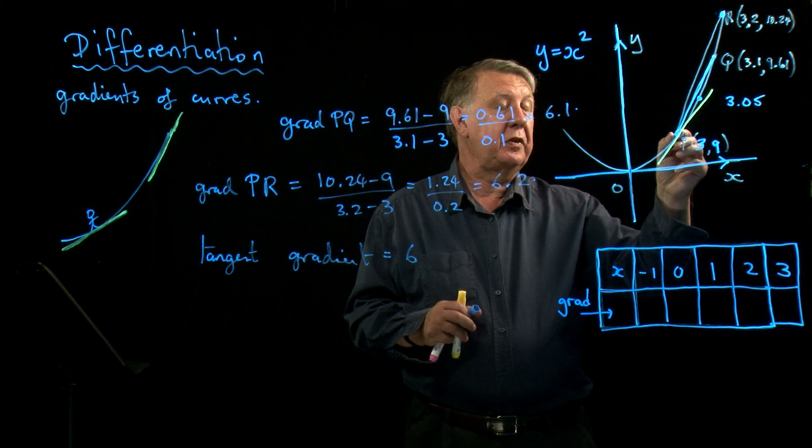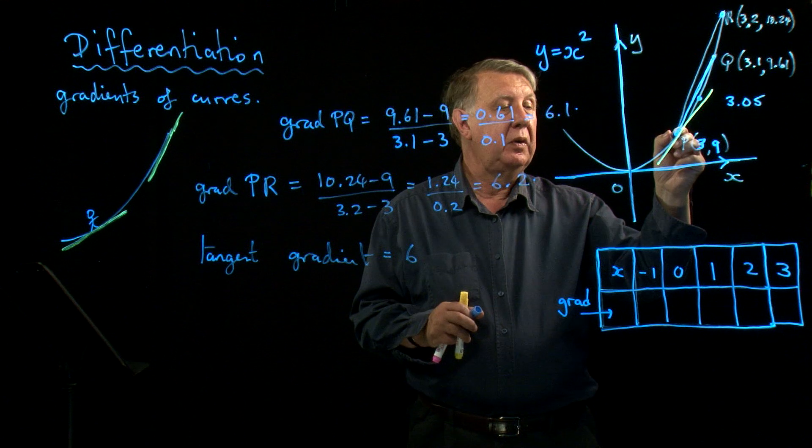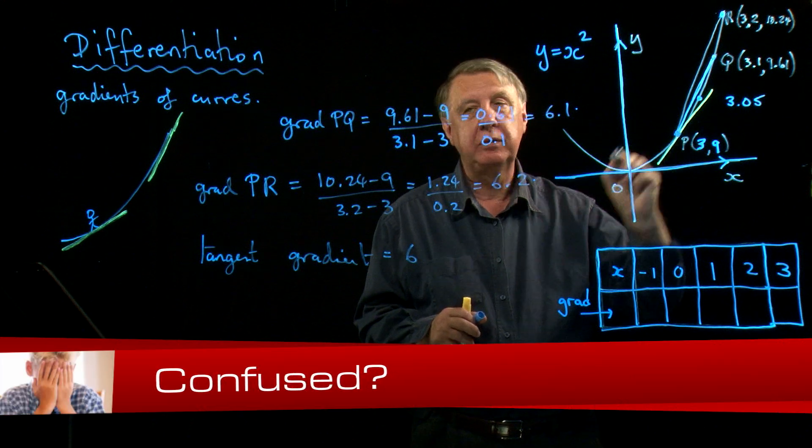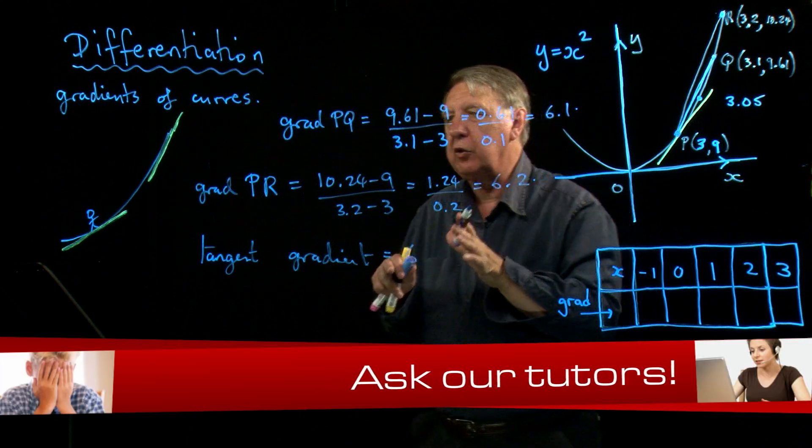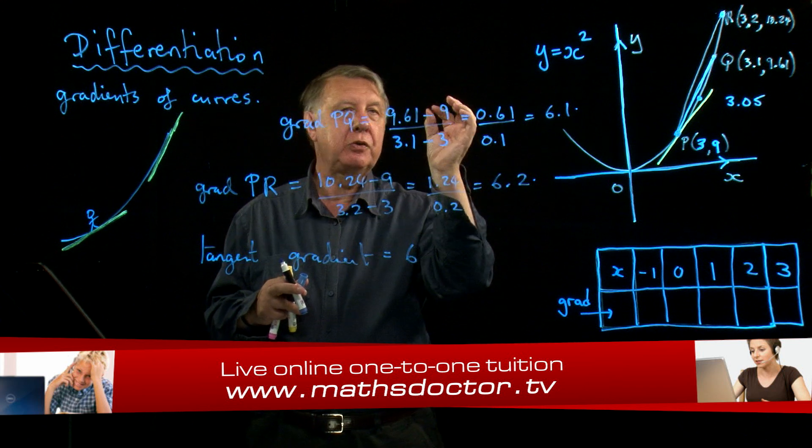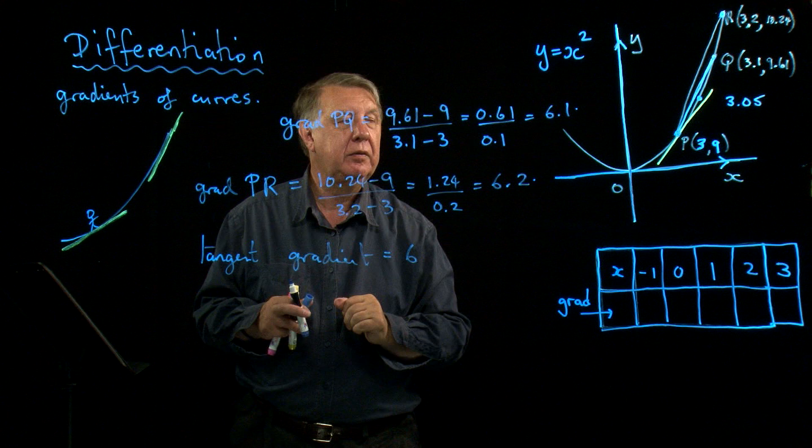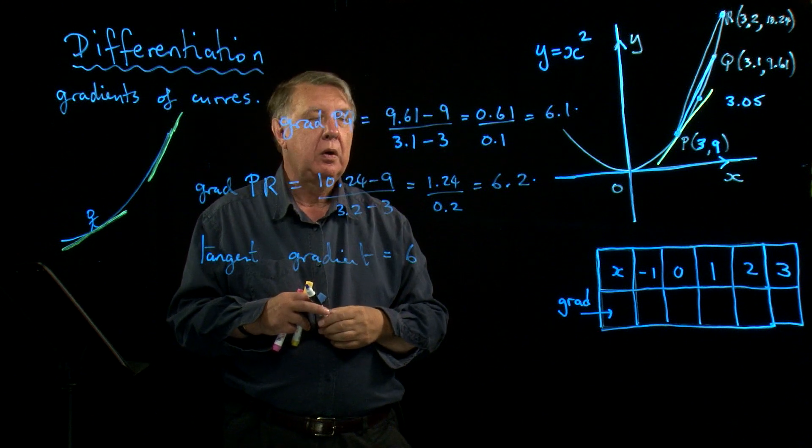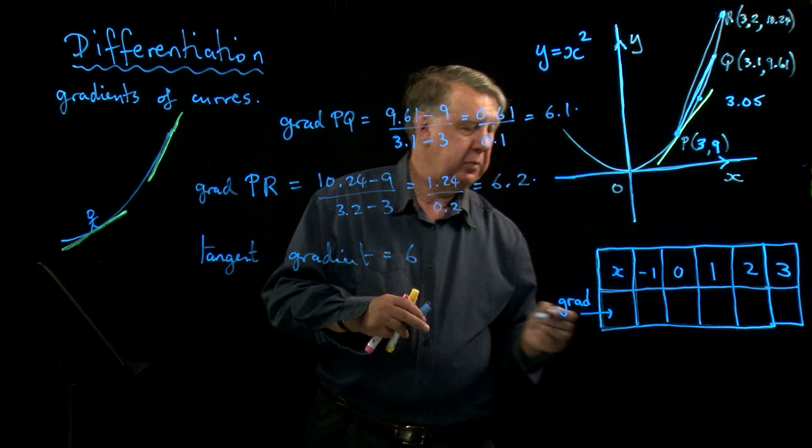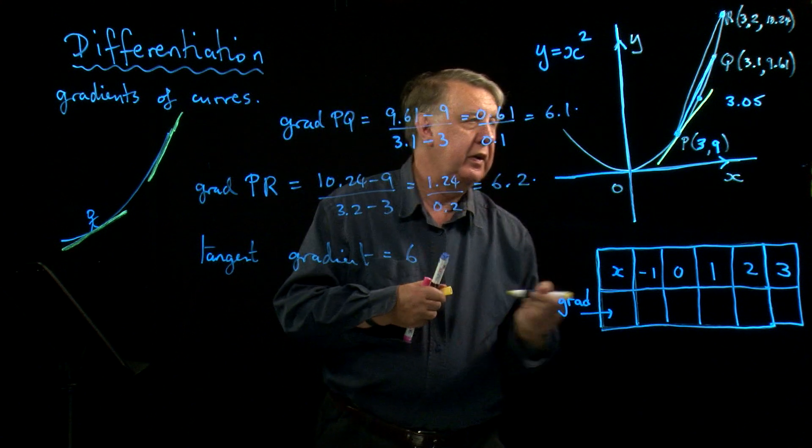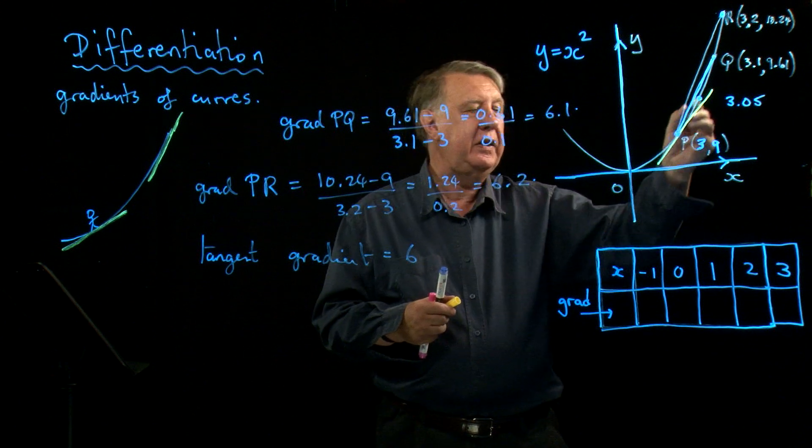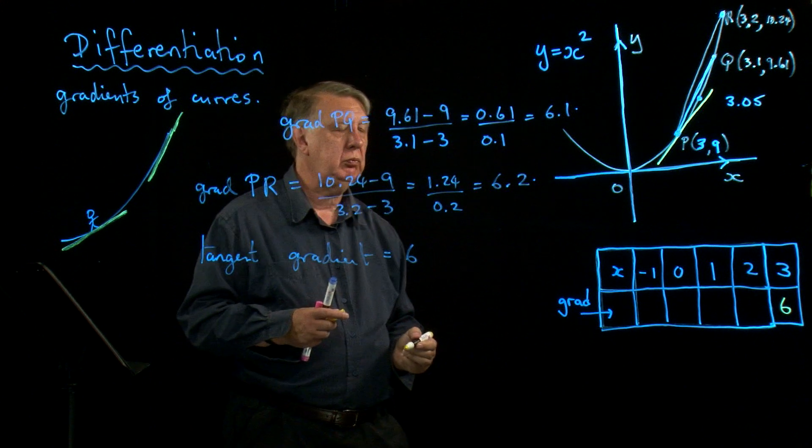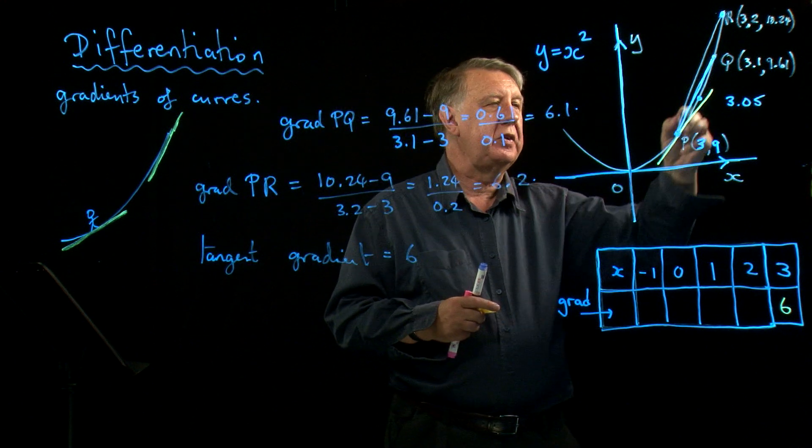They never get exactly to 6, because of course I always need two points to have a line. And the whole point about this yellow line, the tangent, is it only has one point. And so there's lots of little mysteries going on here about points approaching something and not quite getting there. And that's what you'll learn a little bit later on how to cope with the way we write that. So I'm going to fill in my table down here, and I'm going to say that if I was brilliant and could do this so accurately, I would end up with the gradient here as 6.